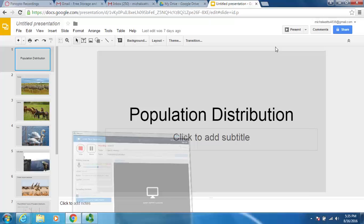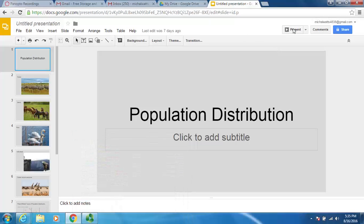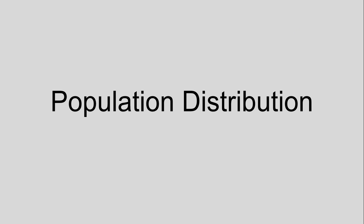Today we're going to talk about population distribution. Population distribution has to do with organisms and where they are in a certain location, most generally an ecosystem. This is a little different than population density. Population density has to do with how many organisms are in an area, whereas population distribution is about where organisms are located within an area.